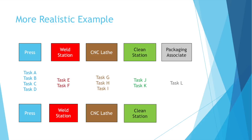In this example, let's pretend we have a press, a weld station, a CNC lathe, a clean station, and a packaging associate. Most of these machines have doubles, but there are only five workers working between machines to produce the same part over an eight-hour shift. Each operator has their own task, and all tasks at that station must be completed before the operator can hand their part to the next operator.